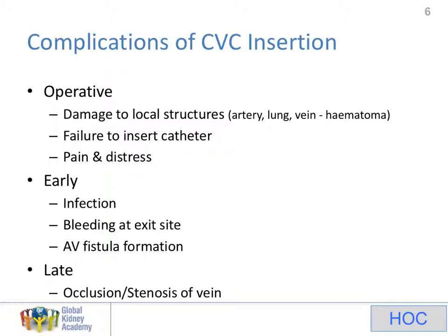The early complications — infection is the one you've all thought about and is the big enemy to these catheters. Of all the forms of access for haemodialysis, infection remains the biggest risk for temporary catheters. Bleeding at the exit site is not uncommon and is due to an operative fault — making too big an exit site — and we'll talk about how that could be prevented or treated. AV fistula formation — this is not the sort of AV fistula that you want. This is where the introduction needle passes through the artery on the way to the vein or the vein on the way to the artery, and that can lead to a fistula forming between the artery and the vein.